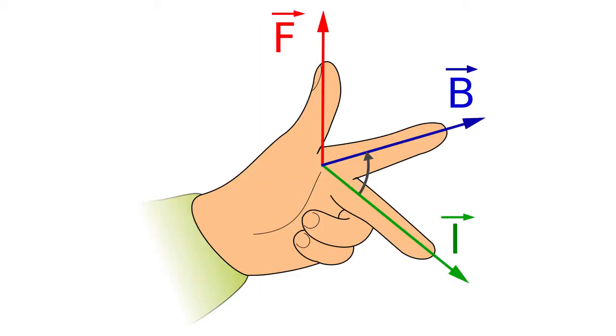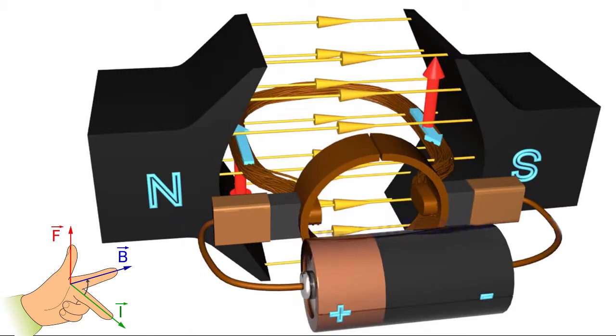We can use Fleming's left-hand rule to determine the direction of this force. Orient your hand like it is in the picture. Point your forefinger in the direction of the magnetic field, and your middle finger in the direction of the current. The direction that your thumb is pointing will be the direction of the resulting force.